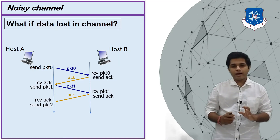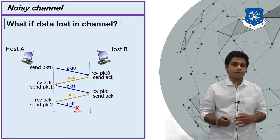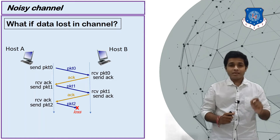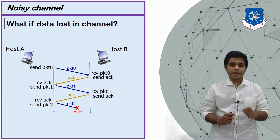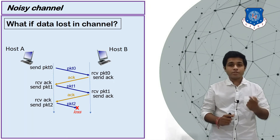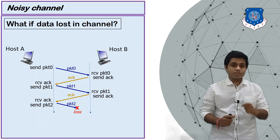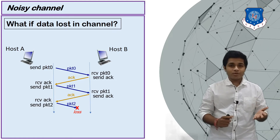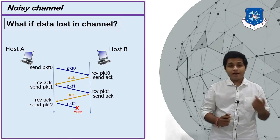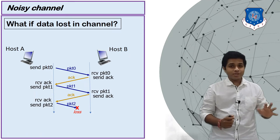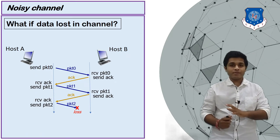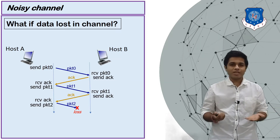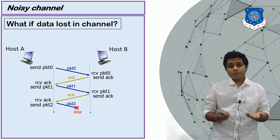Because the channel is noisy, packet 2 is lost somewhere. A has received the acknowledgement for packet 1 and sent packet 2, while B has sent the acknowledgement for packet 1 and is now expecting packet 2. But since packet 2 is lost, B will continuously wait for it. A also doesn't know its packet is lost, so A waits for the acknowledgement for packet 2. Both are waiting indefinitely — this is a deadlock, and no further communication can occur.